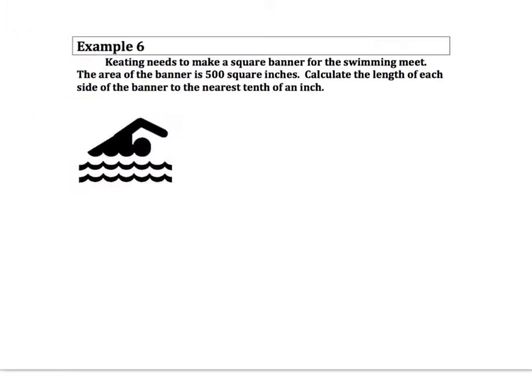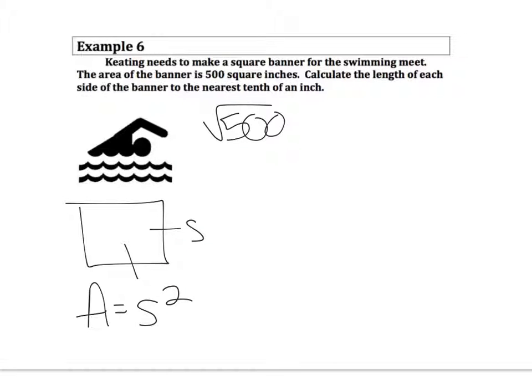All right, the last problem that you had to do is the word problem. Keating needs to make a square banner for the swimming meet. The area of the banner is 500 square inches. Calculate the length of each side of the banner to the nearest tenth. Okay, so we would be taking the square root of 500 because the way we find the area of a square is side times side. So the area is going to be side squared. If we want to find the side and we know the area, we would take the square root of the area, and that should equal the side. So that's what we're going to do, the square root of 500.